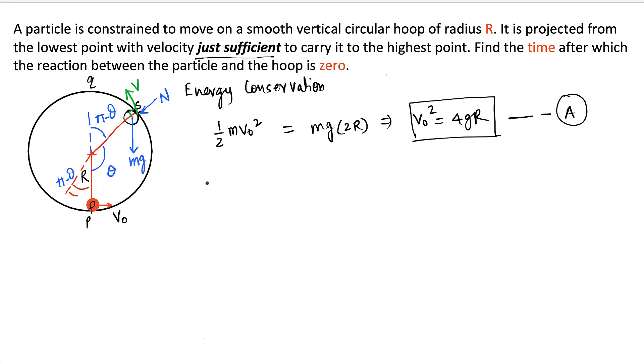Now the free body diagram is complete. Let's say along the radial line if we write the equation F equals MA, we can simply write N plus mg cos(pi minus theta) equals m V square by r. And let's say N equals zero because the reaction is zero at point S. So that would mean V square equals minus gr cos theta. Let's call this equation B.